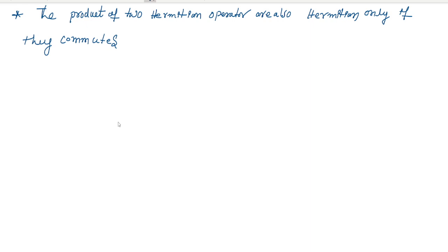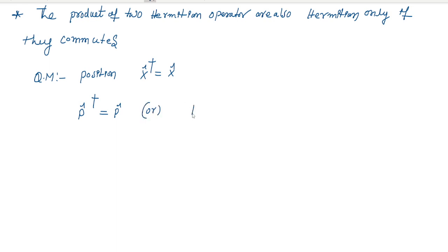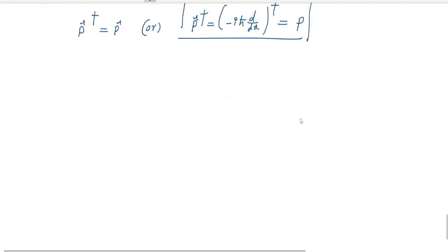Examples of Hermitian operators: the position operator is a Hermitian operator, and the momentum operator in quantum mechanics is also Hermitian. The momentum operator is minus i h-bar d by dx in quantum mechanics. If we apply dagger to this, we get p back. These are the two examples of Hermitian operators.